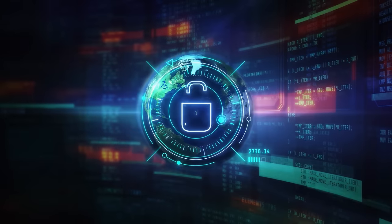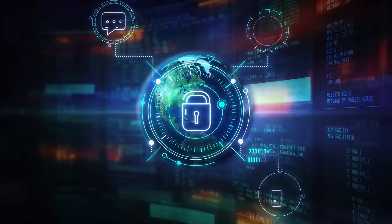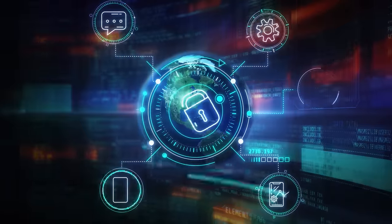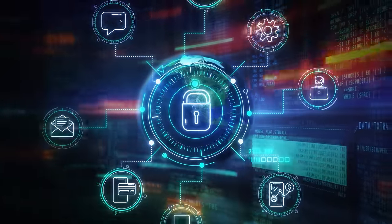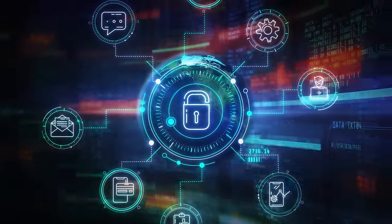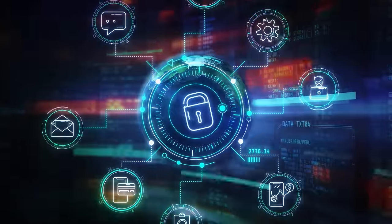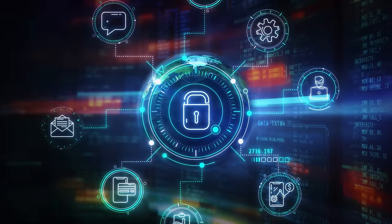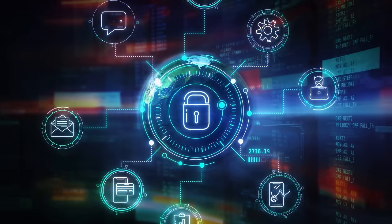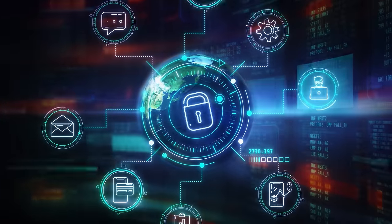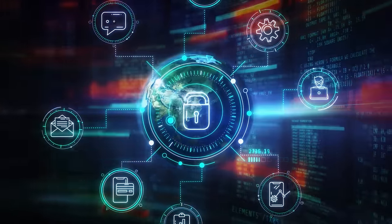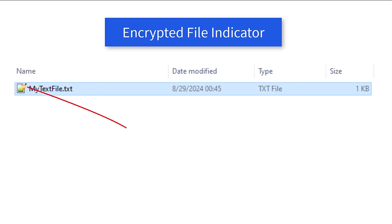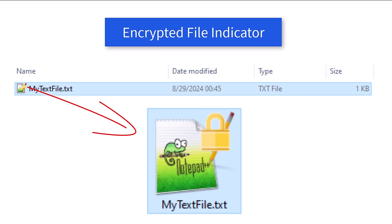Your file or folder has now been encrypted. If you encrypted the folder, then all the files within that folder, and subfolders if you selected that option, are now encrypted. While encrypted folders look no different, an encrypted file will have a gold padlock on the top right of its icon, as you can see here.